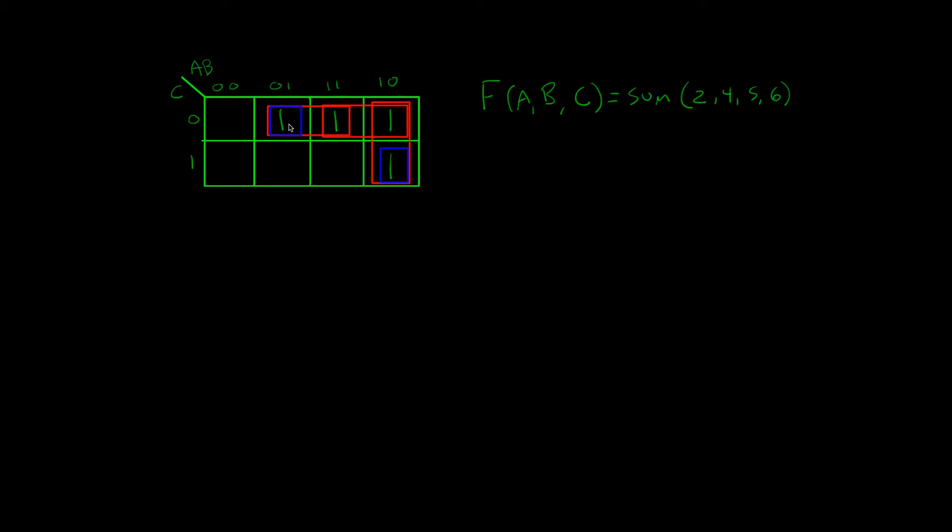And so the first one is going to be the pair that encapsulates here and here. And so we look over. We see that c is a value of 0, so our function is going to have a not c. And then we look up from these.